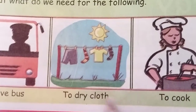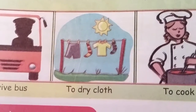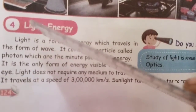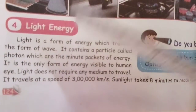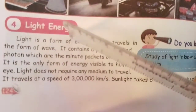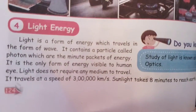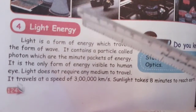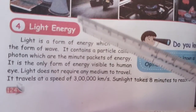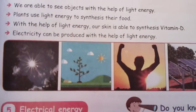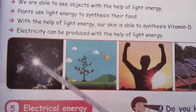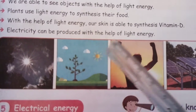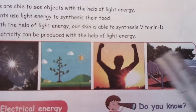These are the uses of heat energy. Students, now we are going to study about light energy. Light is a form of energy that travels in the form of waves — light waves, like sea waves. It travels at the speed of 3 lakh kilometers per second. Now look at this picture. This is sunlight — the sun is the main source of light energy.